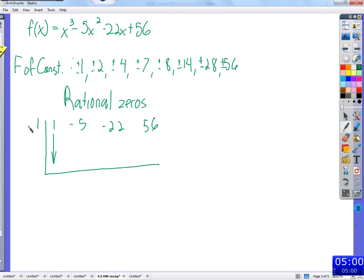One, five, negative 22, 56. Can we just start? We might as well start with positive one and see where that takes us. How will we know if one is a zero? If we get down, the remainder is zero. So bring down the one, number one, negative four, four, negative 26. That 56 minus 26 does not make zero, so we'll just undo all that.